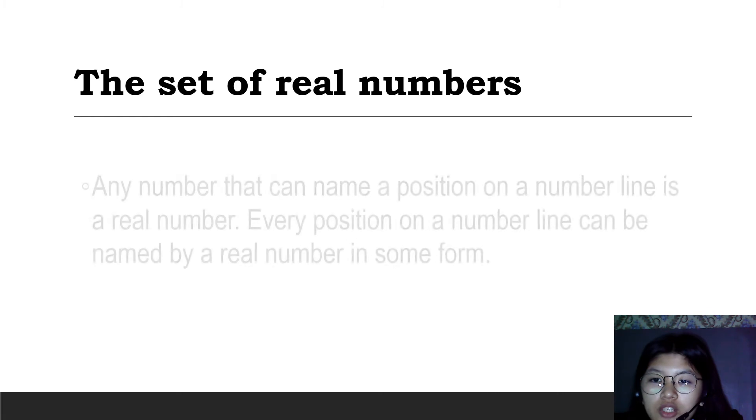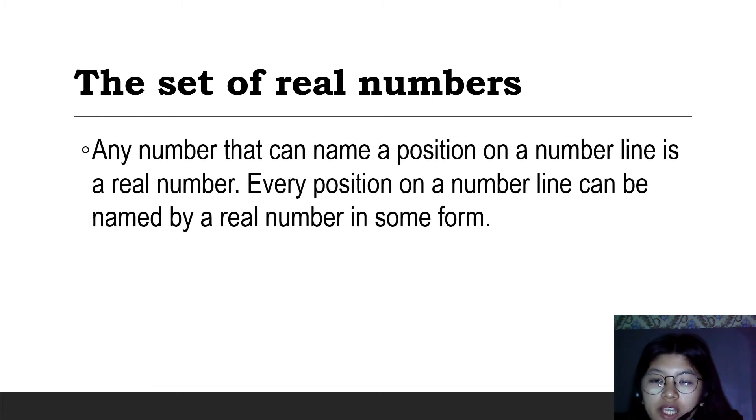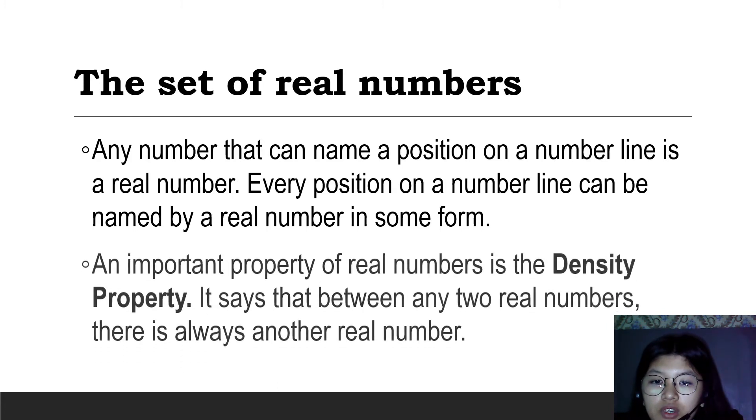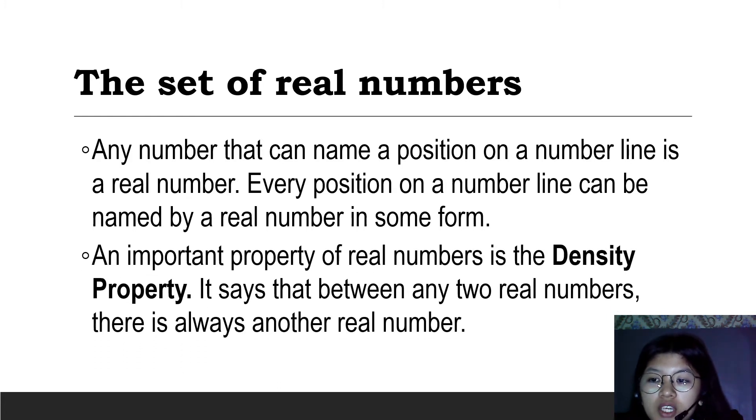The set of real numbers. Any number that can name a position on a number line is a real number. Every position on a number line can be named by a real number in some form. An important property of real numbers is the density property, which says that between any two real numbers there is always another real number.